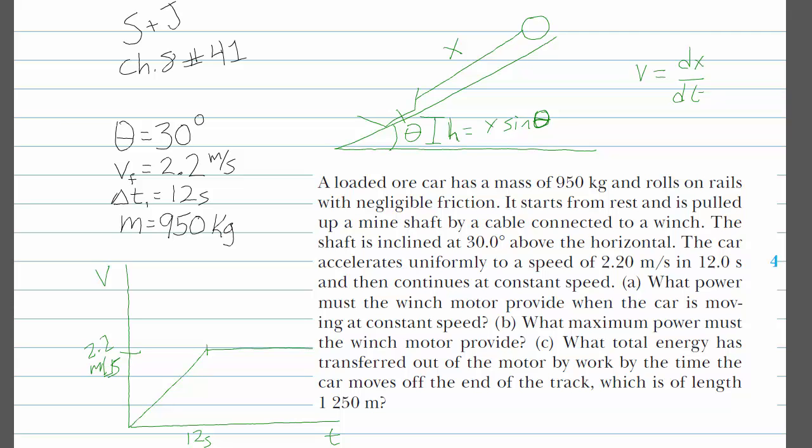Now the problem asks us about the power. Part A says what power must the winch motor provide when the car is moving at a constant speed. Part B is going to ask what's the maximum power it must provide. And then part C talks about total energy.